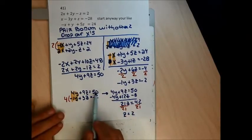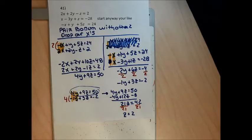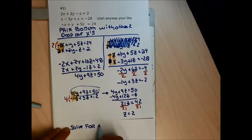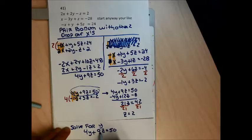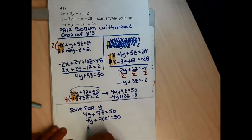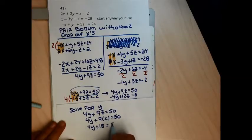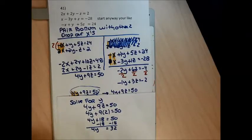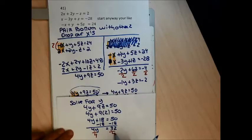Now solving for y using the equation 4y plus 9z equals 50, because it has a positive y. Plugging z equals 2: 4y plus 18 equals 50. Subtracting 18 from both sides gives 4y equals 32, and dividing by 4 gives y equals 8. So z equals 2 and y equals 8.